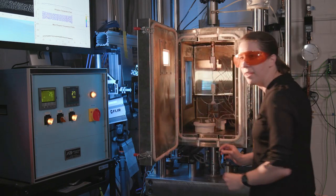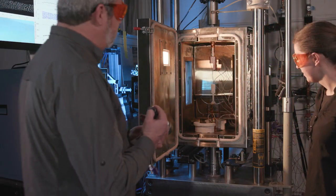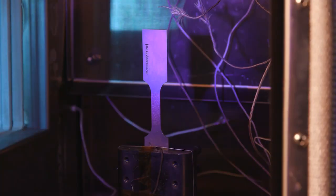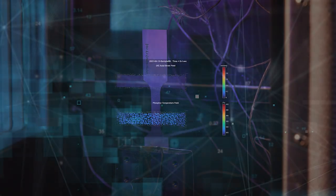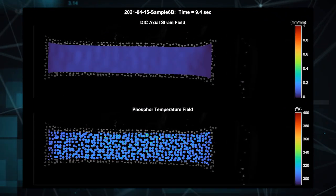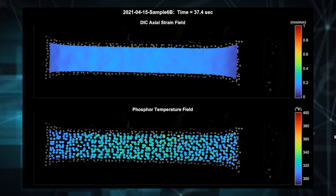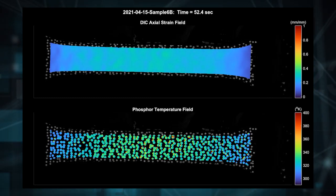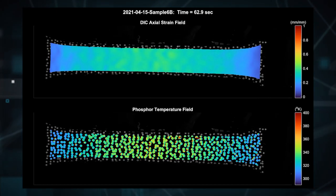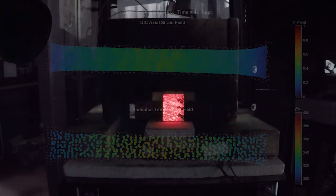TP-DIC works by combining thermographic phosphors with digital image correlation. Phosphors are ceramic materials, but they're doped with an activator ion that responds to light. We excite them with light, and they provide light back to us, and that gives us our temperature information, while the digital image correlation tracks the pattern and provides us a strain measurement.